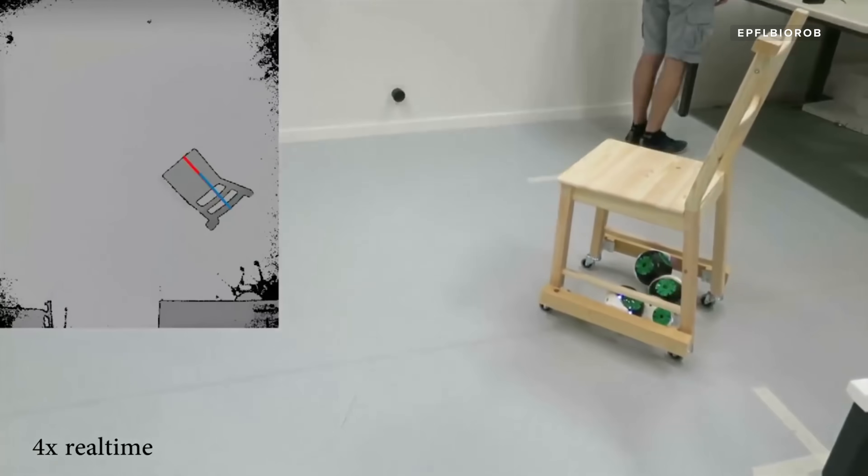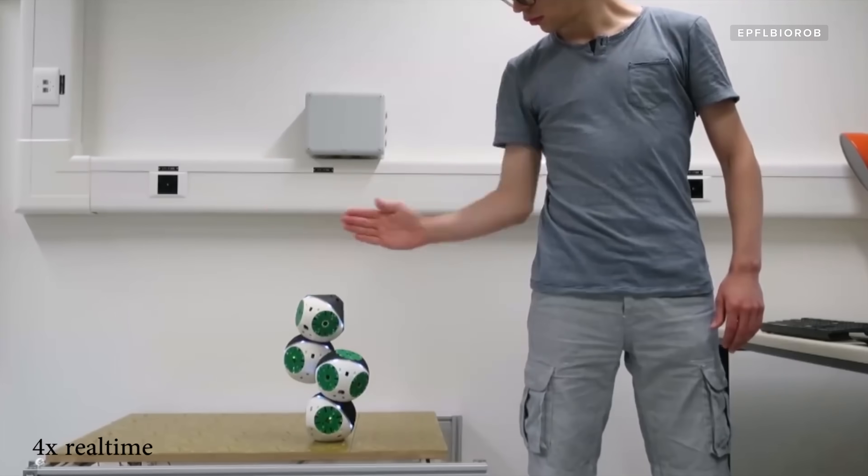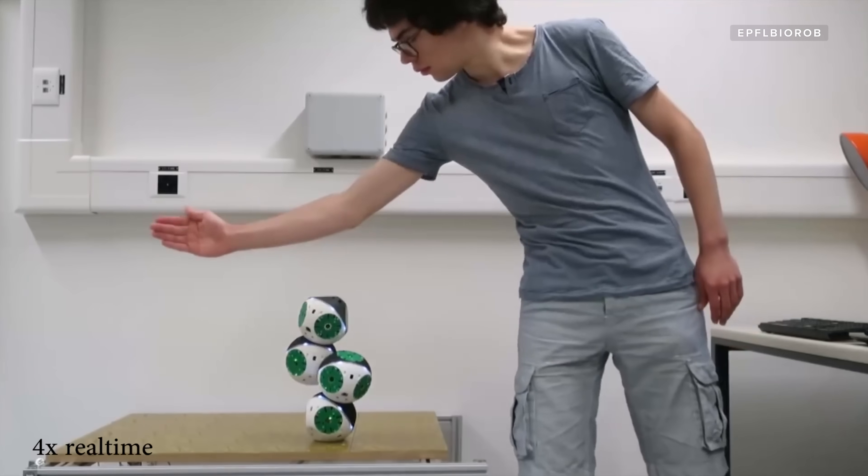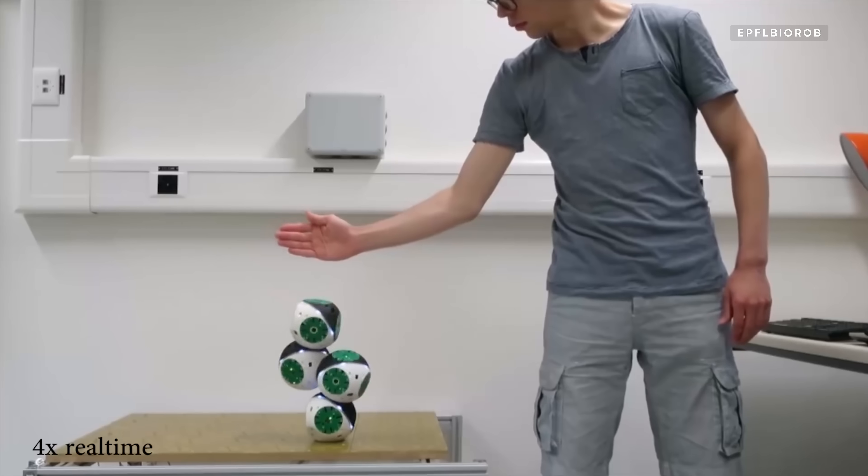For some of these experiments, the Roombots worked in conjunction with a Microsoft Kinect camera, enabling the robots to move in reaction to the movements of a person.